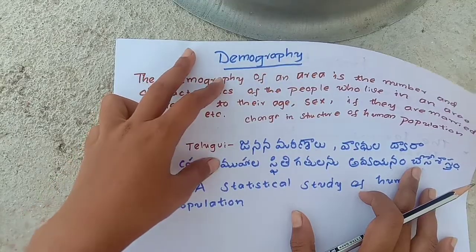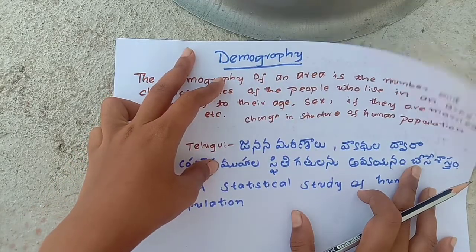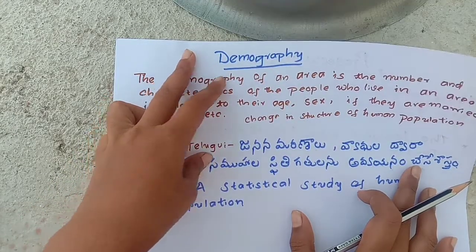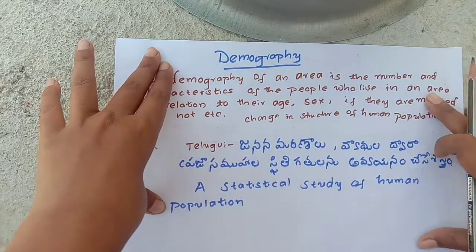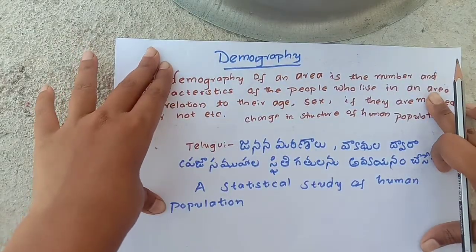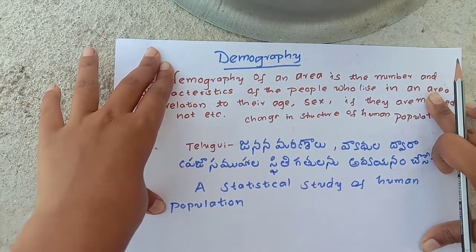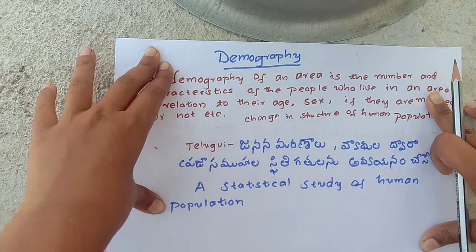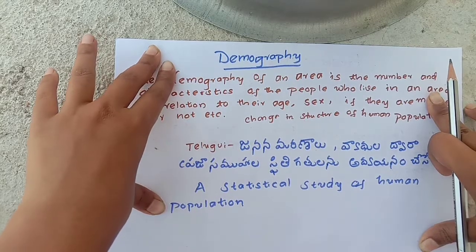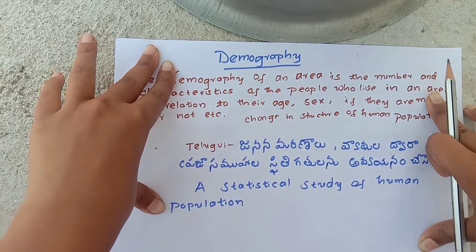Demography is simply a Statistical Study of Human Population. What is the population? What changes did they undergo last year?